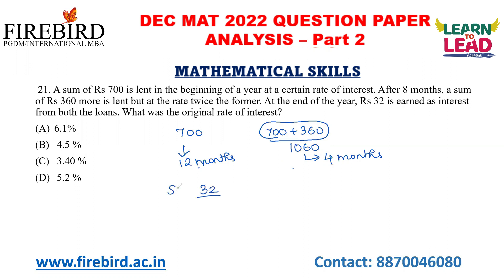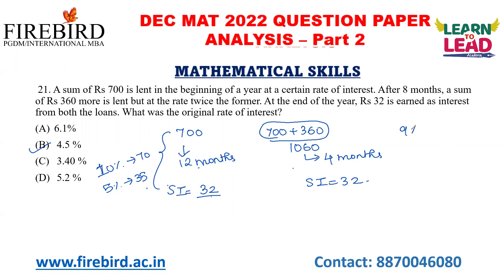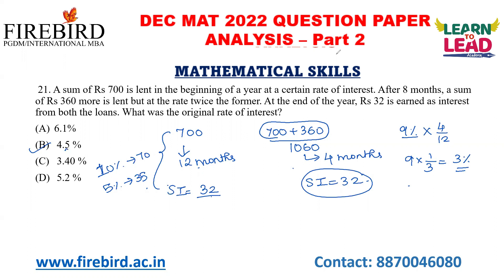In both schemes, the total interest earned is Rs. 32. If I check the rate of interest, 10% of 700 is 70 and 5% is 35. Since 32 is nearer to 5%, I can take it as 4.5%. In the second scheme, if I invest at 9% rate of interest for only 4 months — that is 4 by 12, which is one third of the year — 9 into 1 by 3 equals 3% invested. What is 3% of 1060? 1% is 10.6 and 3% will be around 31.8, which is nearer to 32. So my rate of interest for this question is 4.5%.